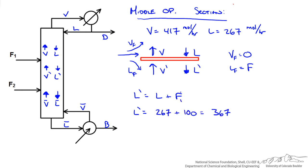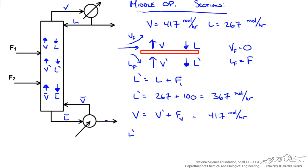We happen to know both of these values so our L prime must be 367. Now V would be equal to V prime plus Fv. But since there is no vapor in our feed this is just going to be equal to V prime. So our vapor flow rate V in the top section is just equal to our vapor flow rate in the middle section V prime.